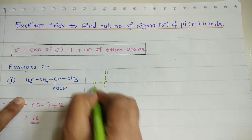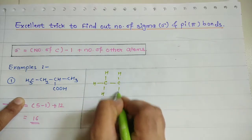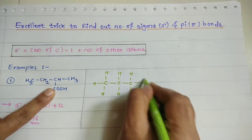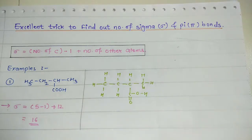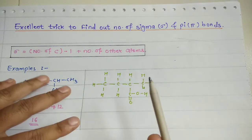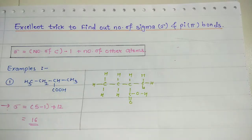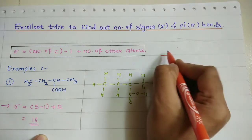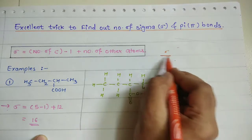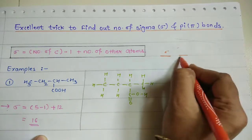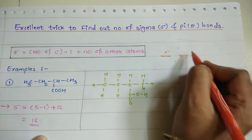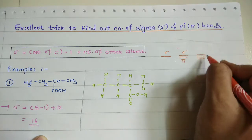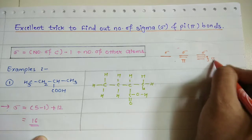Now, if you draw the entire structure: Carbon with 3 hydrogens, Carbon with 2 hydrogens, Carbon with 1 hydrogen, here is a C double bond O, an OH group, and here is CH3. First, you need to draw the individual structure. Then identify all the sigma bonds. A single line between two atoms is a sigma bond. When two atoms share a double bond, one bond is sigma and one is pi. For a triple bond, there is one sigma and two pi bonds.